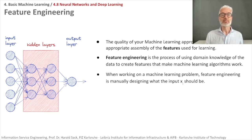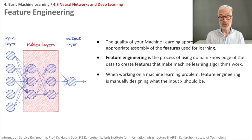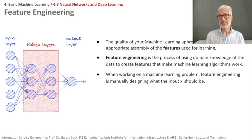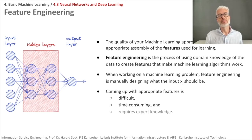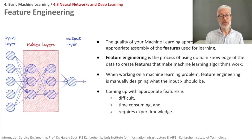Feature engineering is manually designing what the input x_i should be. It's a manual process requiring domain knowledge. There are helpers like correlation analysis, but it also pays off to have an expert on board who can say, for example, that you should include edges in an image if you want to do object detection. Coming up with appropriate features is usually difficult, time-consuming, and requires expert knowledge.